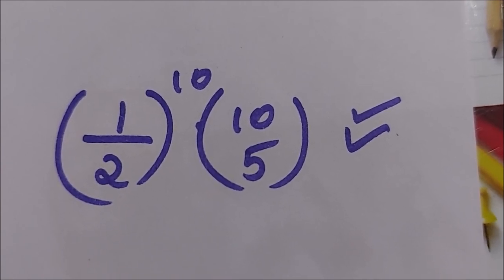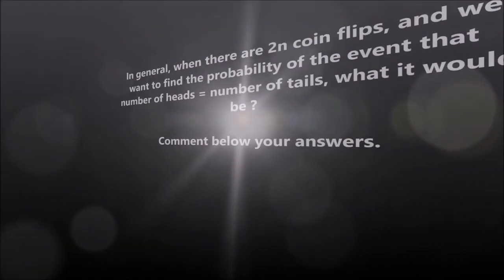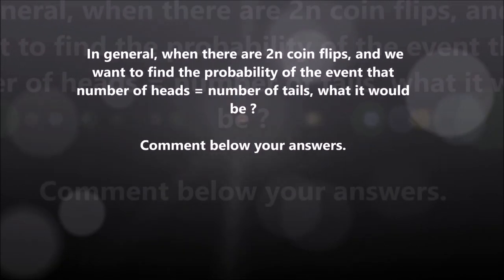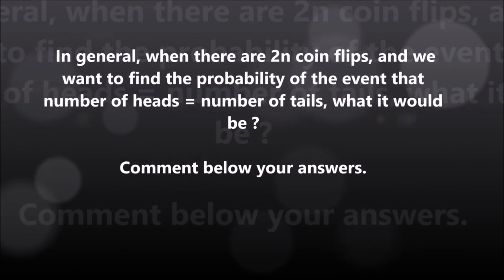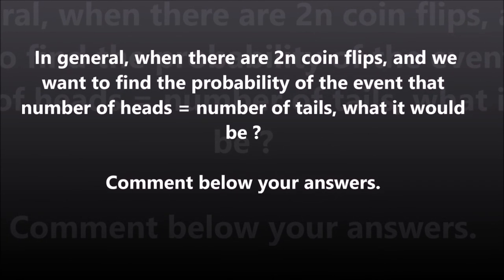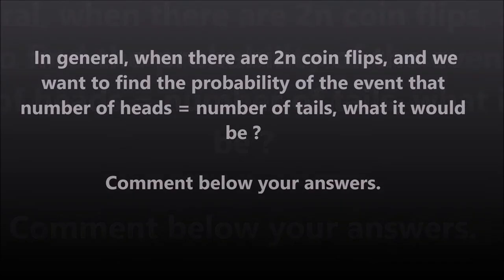Now in general, when there are 2n coin flips and we want to find the probability of the event that the number of heads equals the number of tails, what would it be? Try it out and don't forget to comment your answers below. Hope to see you in the next video. Thank you.